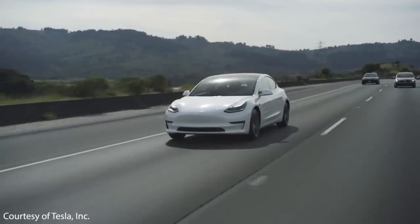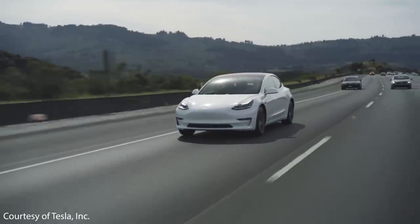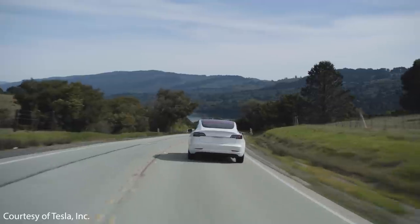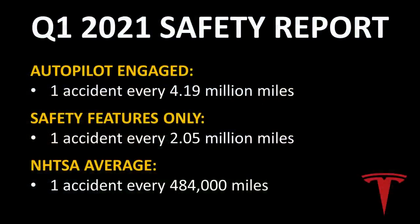Tesla is proving that they can develop a system that is much safer than a human driver. In fact, their autopilot system, while it's not yet a full self-driving system but technically a level two system, is approaching somewhere about 10 times the safety of a human driver. According to Tesla's Q1 2021 safety report, with autopilot engaged, the Tesla vehicles only had one accident for every 4.19 million miles driven. This is compared to the NHTSA average of one accident for every 484,000 miles. So if Tesla is able to release a full self-driving system that is 10 times safer than a human driver, is that good enough?